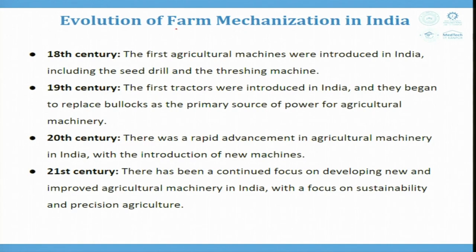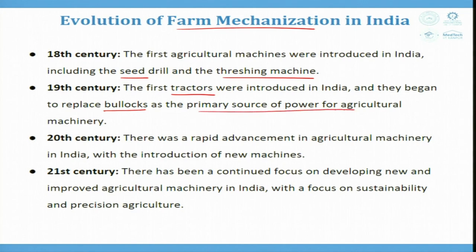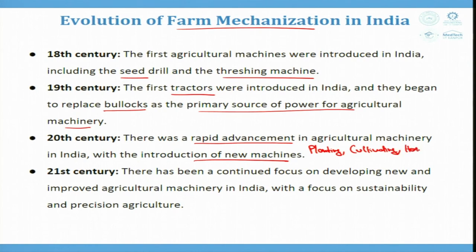Looking at the evolution of farm mechanization in India: in the 18th century, the first agriculture machines were introduced, including the seed drill and threshing machine. In the 19th century, tractors came into the picture and began replacing animals as the primary power source. In the 20th century, rapid advancement brought new machines for planting, cultivating, harvesting, and threshing.